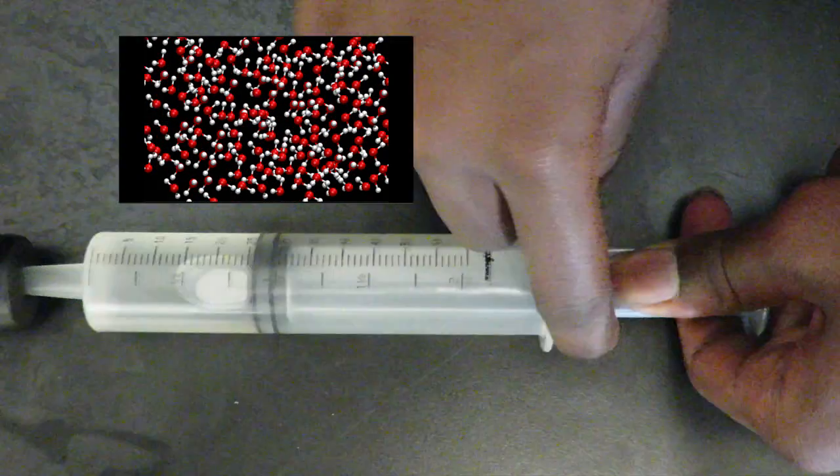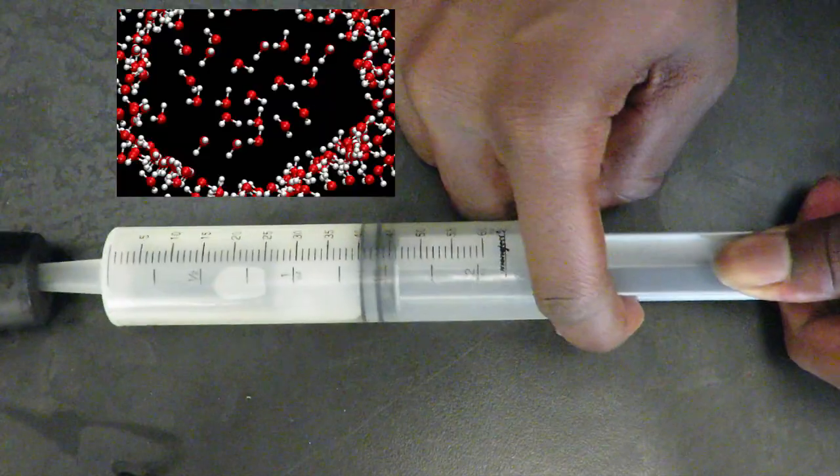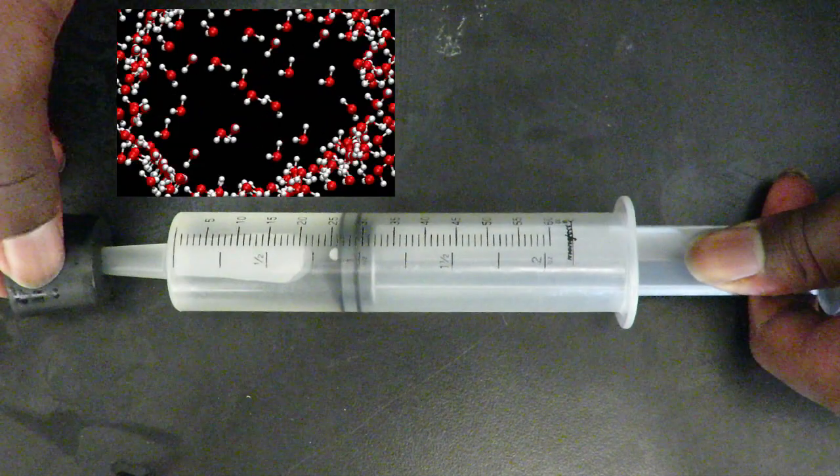When we pull the plunger out, we're decreasing the pressure. That means those molecules can spread out more easily, and the bubble grows.